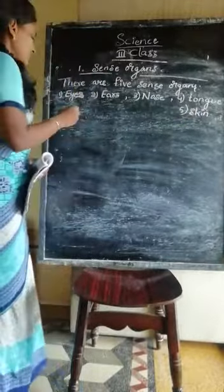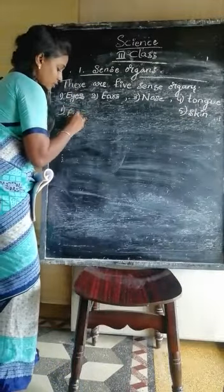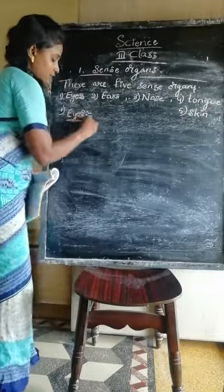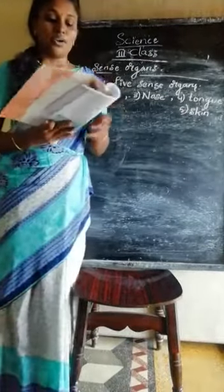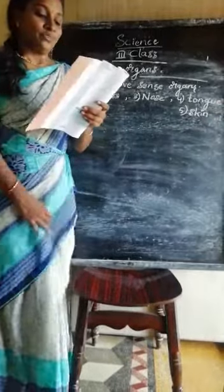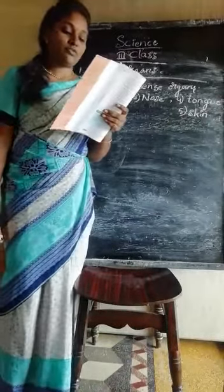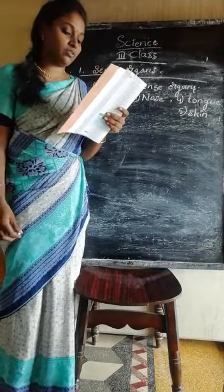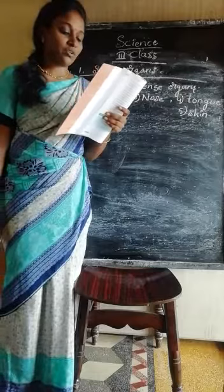So the first topic is eyes. Today we learn about eyes. We can see the colorful world around us with the help of our eyes. It helps us to read, see things whether they are small or big, tall or short, far or near.